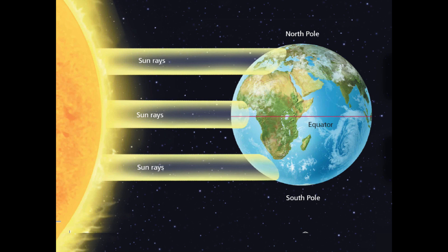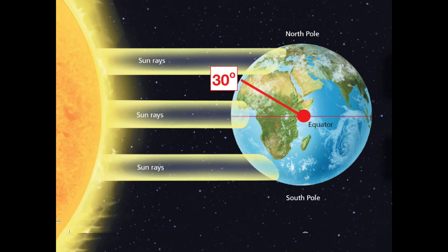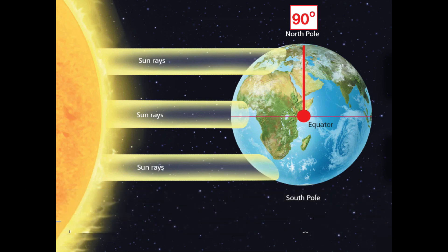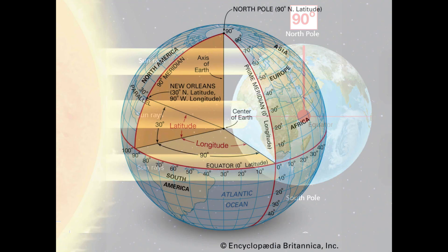The part of Earth that gets the most direct sunlight is the equator, shown as the red line running straight down the middle of the Earth. Latitude starts at zero degrees at the equator. Going upward, you reach 30 degrees, then 60, and all the way to 90 at the north pole. You can have any degree in between, but as a starting point, the equator is zero and the north pole is 90 degrees.